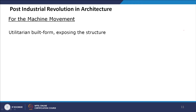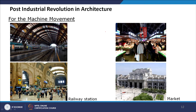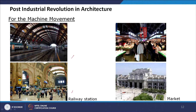Utilitarian built form exposing the structure was a defining style. Looking at the Milan railway station, the ornate part is a manifestation of the previous architectural movement clubbed with the railway station's main area. The platform required a larger span which cannot be designed with stone or concrete, so steel elements were used, juxtaposed with the concrete design.